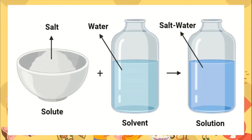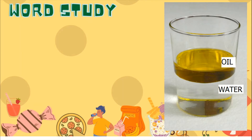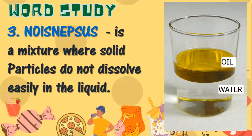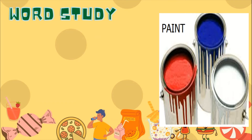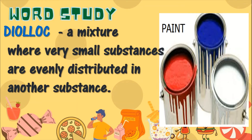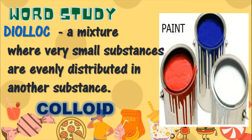Salt dissolved in water is what we call a solution. Number three: it is a mixture where solid particles do not dissolve easily in the liquid — like this picture of oil mixed with water. Can you guess? Suspension. How about this one: a mixture where very small substances are evenly distributed in another substance — example is paint. Can you guess? Colloid.